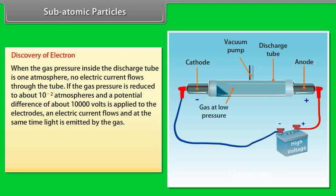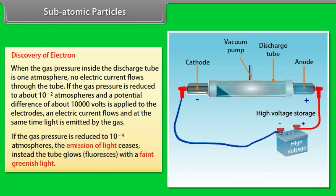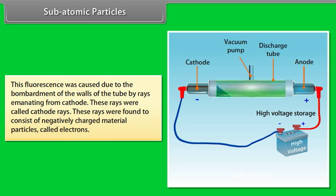If the gas pressure is reduced to about 10 to the power minus 2 atmospheres and a potential difference of about 10,000 volts is applied, electric current flows and light is emitted. If the pressure is further reduced to 10 to the power minus 4 atmospheres, the emission of light ceases and the tube glows with a faint greenish fluorescence. This fluorescence was caused by bombardment of the tube walls by rays emanating from the cathode, called cathode rays, which were found to consist of negatively charged particles called electrons.